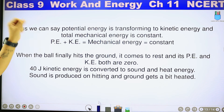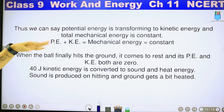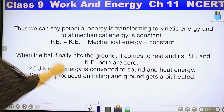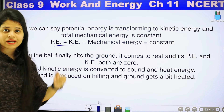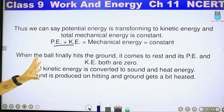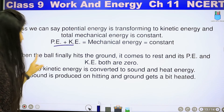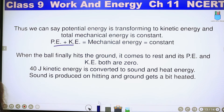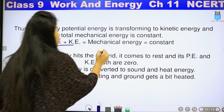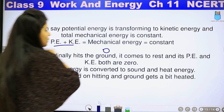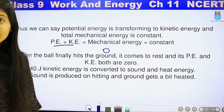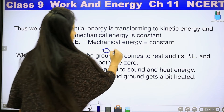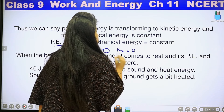So we can say potential energy is transformed to kinetic energy, and the total mechanical energy is constant. When we add them, it will be constant throughout — only the proportion of potential and kinetic energy changes. When the ball finally hits the ground, it comes to rest and has no more movement.